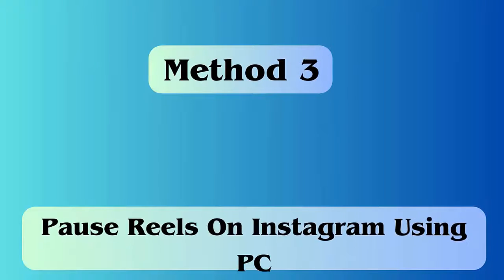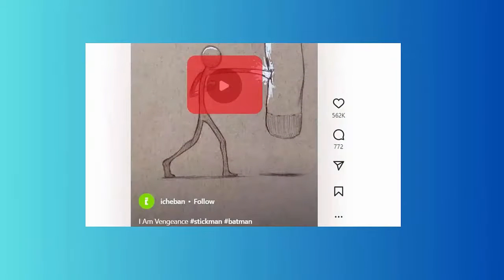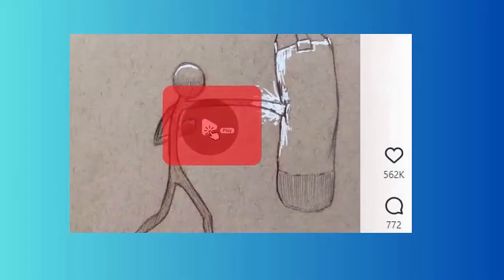Method three: pause reels on Instagram using PC. Follow the steps — first, open instagram.com on PC and log into it. Now move to your profile and click on the Reels option to open it. When your reel begins to play, click anywhere on the left side of the window to pause. You can continue with it for as much time as you want.